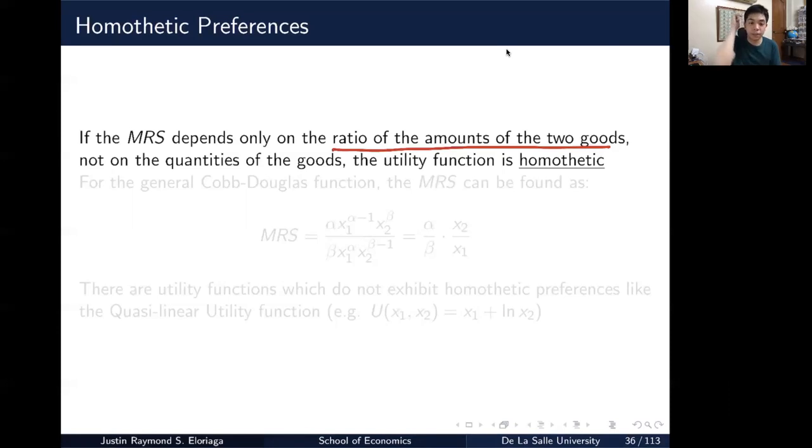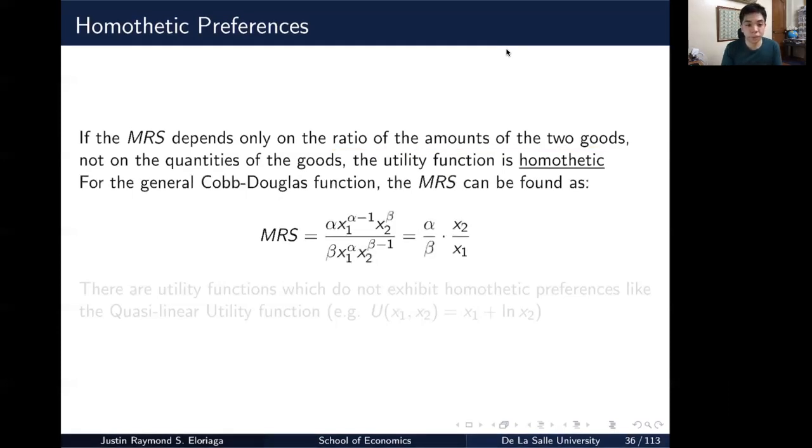So if you look at this, notice that we have here the marginal rate of substitution for a typical Cobb-Douglas function. So how did we derive this? Say our typical Cobb-Douglas is x1 raised to alpha, x2 raised to beta. Well, u1 or that first order derivative of the utility function with respect to x1 is just alpha, x1 alpha minus 1, x2 raised to beta.